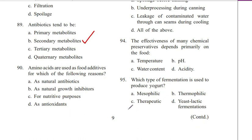Question 90. Amino acids are used as food additives for which of the following reasons? As natural antibiotics, natural growth inhibitors, for nutritive purposes, or as antioxidants. Answer C. For nutritive purposes.